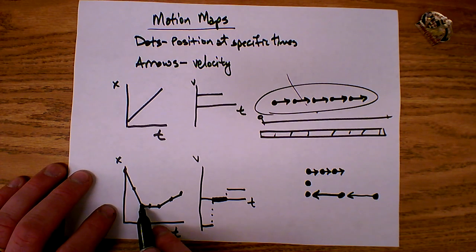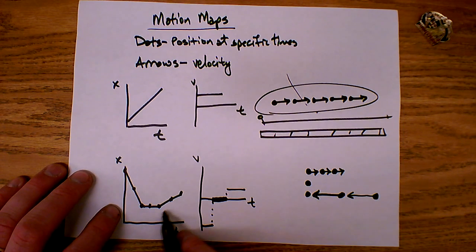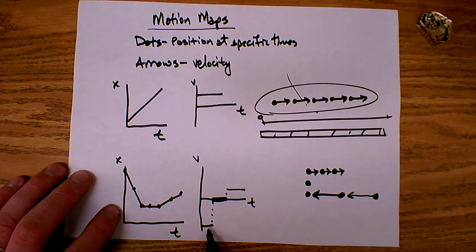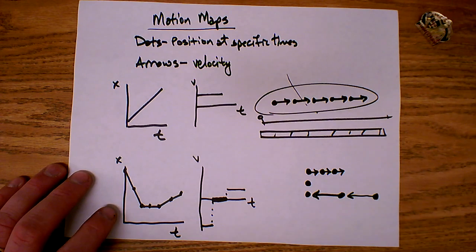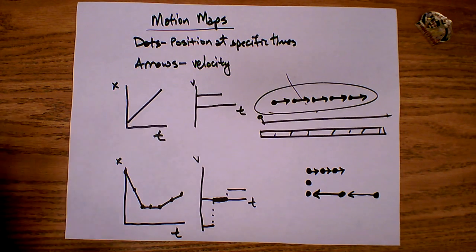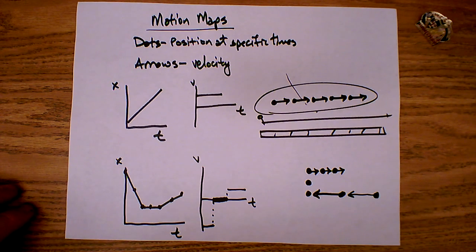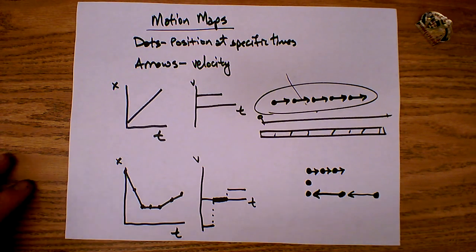Moving to the left quickly, stopping, moving to the right slowly — that's the same story told by the position-time graph, the velocity-time graph, and the motion map. Those are the different ways you can represent the motion of a constant velocity object.